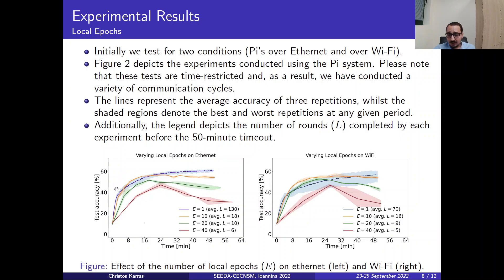Here we have the case where local epochs occur on the Raspberry Pi device across Ethernet. With blue, we have one full local epoch with more communication rounds, 130, while on the other case, we increase the epochs and we decrease the communication rounds.